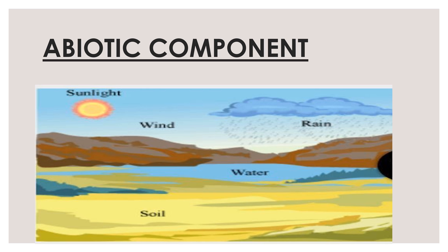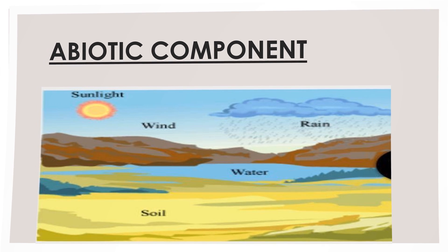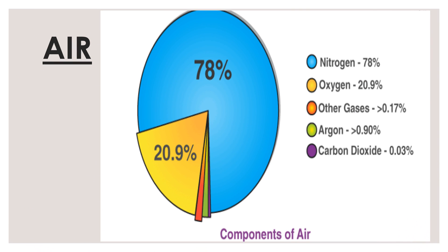Now let us take up each one individually. The first one is air, or wind. In this table you can see the composition of air: the maximum amount is 78% nitrogen, then 20.9% oxygen, other gases 0.17%, argon less than 0.99%, and carbon dioxide 0.03%.